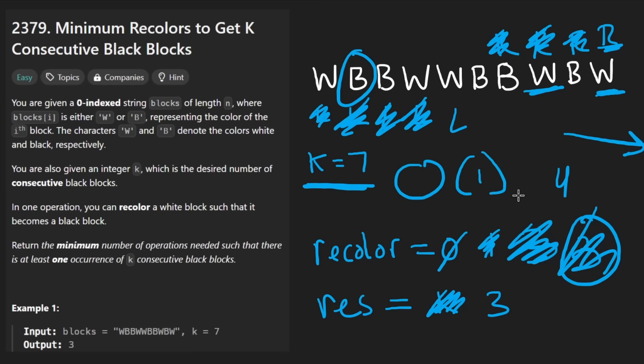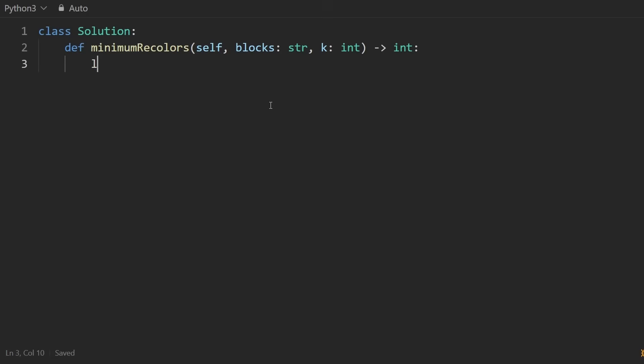So in terms of the code, it's pretty much going to be exactly how I kind of set it right now. Left pointer is going to be zero. I'm going to have my right pointer go from the beginning to the end of the blocks input. And I'm going to have my recolor count initially to zero, and result is initially going to be k. We are going to return the result.